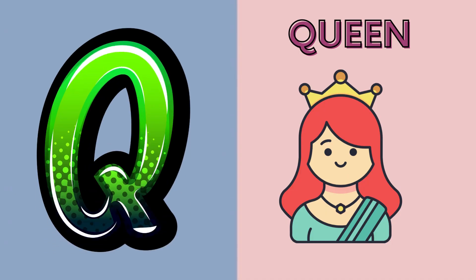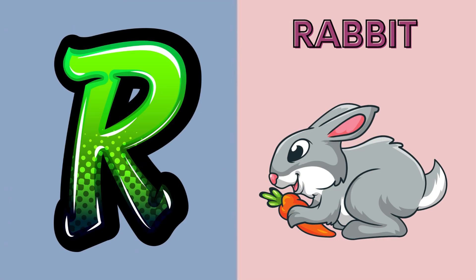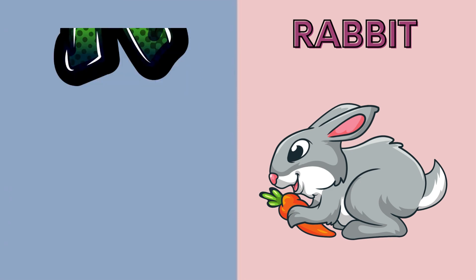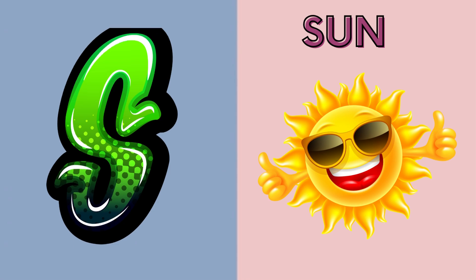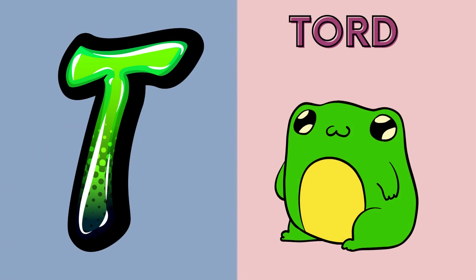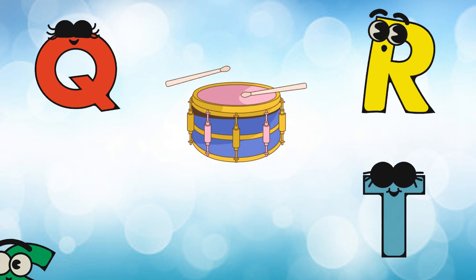Q is for queen, k-k-queen. R is for rabbit, r-r-rabbit. S is for sun, s-s-sun. T is for toad, t-t-toad.